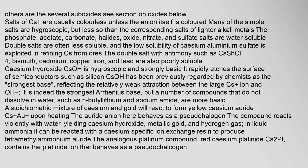Caesium hydroxide (CsOH) is hygroscopic and strongly basic. It rapidly etches the surface of semiconductors such as silicon. CsOH has been previously regarded by chemists as the strongest base. A stoichiometric mixture of caesium and gold will react to form yellow caesium auride (CsAu) upon heating. The auride anion behaves as a pseudohalogen. The compound reacts violently with water, yielding caesium hydroxide, metallic gold, and hydrogen gas.